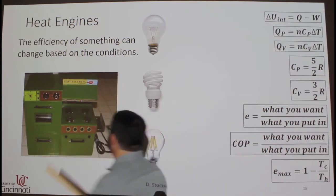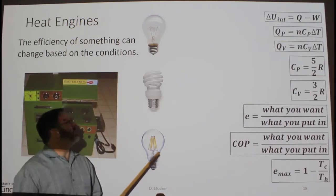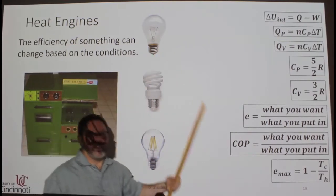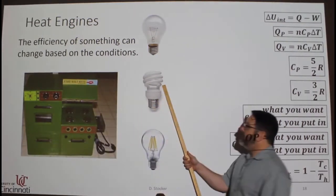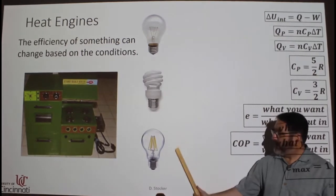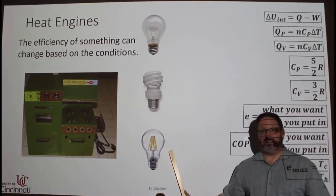For example, there are three different light bulbs here. The top one, this is called an incandescent bulb, this is a compact fluorescent bulb, and this is an LED light bulb.